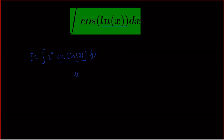Now I'm going to consider u as cos(ln x), so we get du equal to minus sine(ln x) times 1/x dx. And dv as x to the power 0 dx, so we get v equal to x.